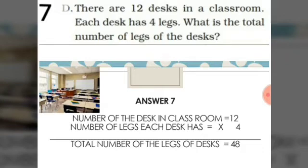Seventh sum: there are 12 desks in the classroom. Each desk has 4 legs. What is the total number of legs? The number of desks in the classroom is 12 and the number of legs each desk has is 4. To find the total number of legs of the desks, we have to multiply 12 into 4, which is equal to 48.